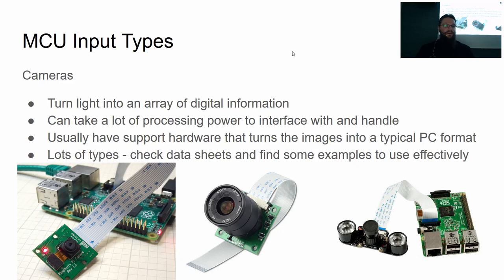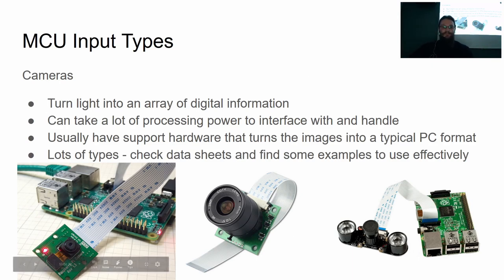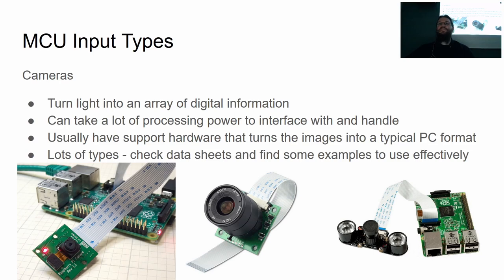Another type of input are cameras. These almost always have their own control boards and will take a picture, process it, and spit out a JPEG string that you need to deal with. For something like an 8-bit Arduino, cameras are difficult to use effectively because you don't have a lot of processing power or storage space. For things like Raspberry Pis, you can feed it to image recognition software and have a great time. They could be fun depending on what you're trying to do.